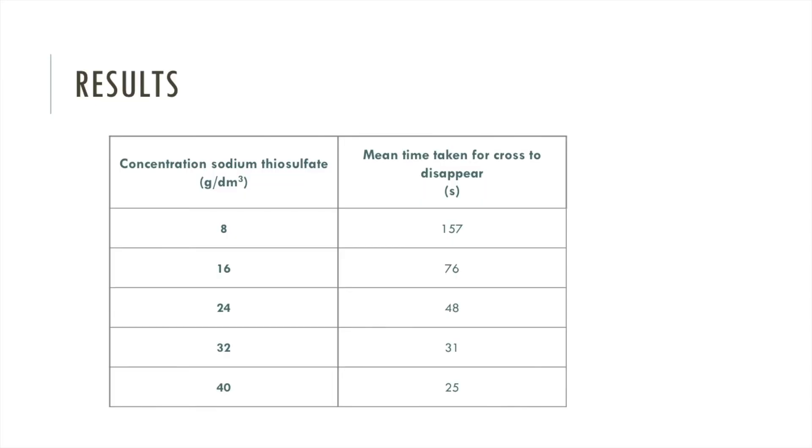After repeating all of that two more times and finding the mean, I produced this results table. So as to not crowd the slide with too many numbers, I've left out all the trial recordings. I'm just showing the different concentrations of sodium thiosulfate and the mean time for the cross to disappear. We can see from these numbers that as the concentration of sodium thiosulfate increases, the time for the cross to disappear decreases. If a reaction takes less time, it means the reaction went faster, which is why if the time taken decreases, we know the rate of reaction has increased.